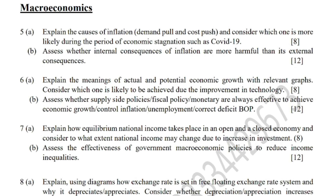Question number five is: explain the causes of inflation — demand-pull and cost-push — and consider which one of them is more likely during the period of economic stagnation such as COVID-19. In this question you have to accomplish Assessment Objective 1 (knowledge, 3 marks), Assessment Objective 2 (analysis, 3 marks), and Assessment Objective 3 (evaluation, 2 marks).